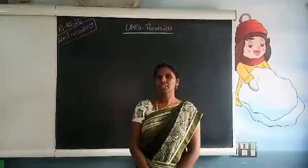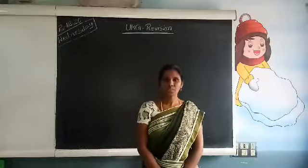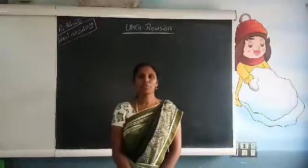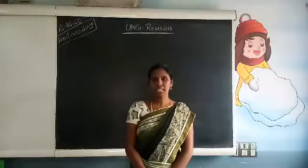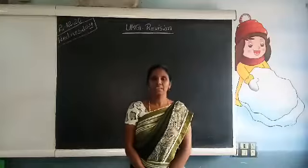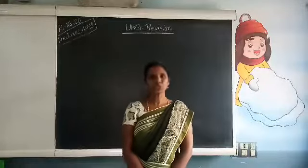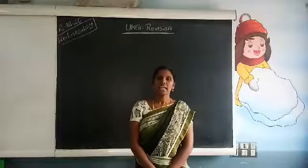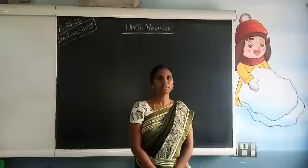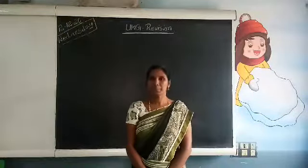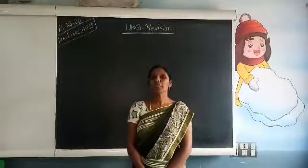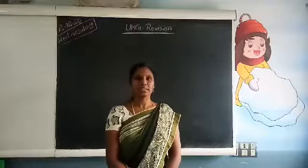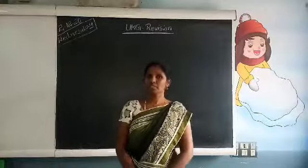Let us revise months of the year. There are 12 months in a year: January — J-A-N-U-A-R-Y, February — F-E-B-R-U-A-R-Y, March — M-A-R-C-H, April — A-P-R-I-L, May — M-A-Y, June — J-U-N-E, July — J-U-L-Y, August — A-U-G-U-S-T, September — S-E-P-T-E-M-B-E-R, October — O-C-T-O-B-E-R, November — N-O-V-E-M-B-E-R, and December — D-E-C-E-M-B-E-R.